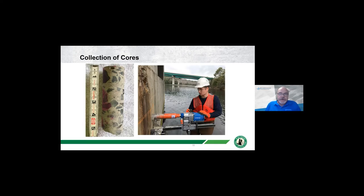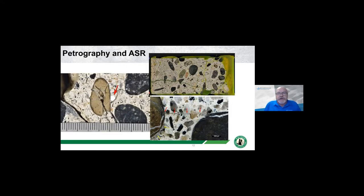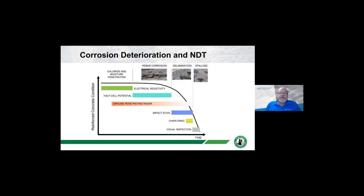There is a very appropriate need for core and lab testing for various tests such as chloride concentration or petrography—trying to quantify alkali silica reaction by looking at a clear cut through the concrete matrix under a microscope. But to understand the corrosion deterioration in terms of time relative to non-destructive test methods, we want to catch the deterioration as early as possible. Ground penetrating radar, half-cell potential, impact echo, and sonic testing can help us recognize where deterioration is occurring before it's very visible.